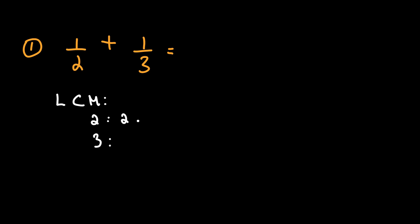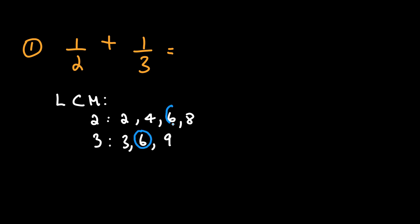For two we have: two, four, six, eight. For three we have: three, six, nine. The least common multiple is the least number that appears in both lists, which is six.